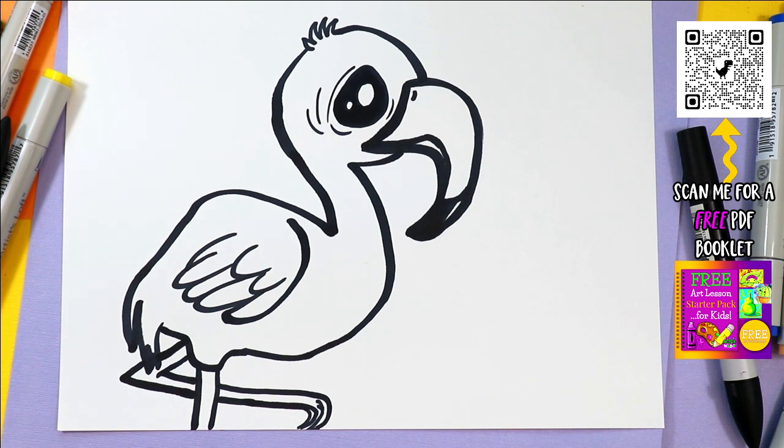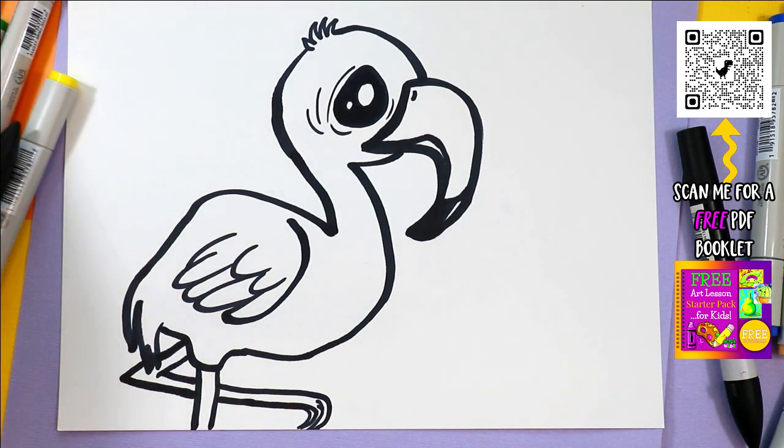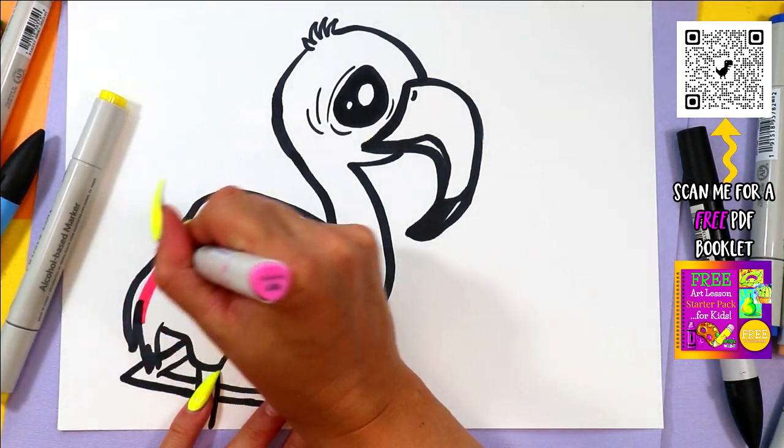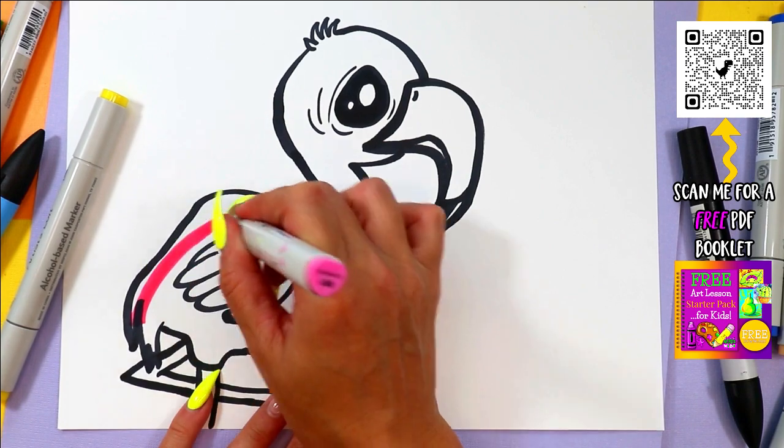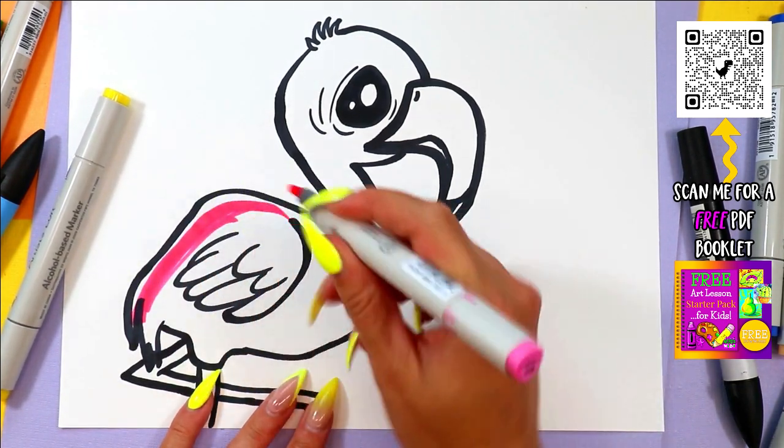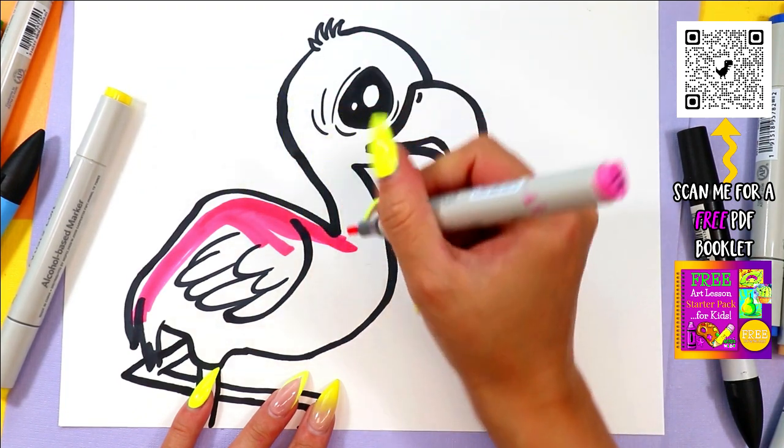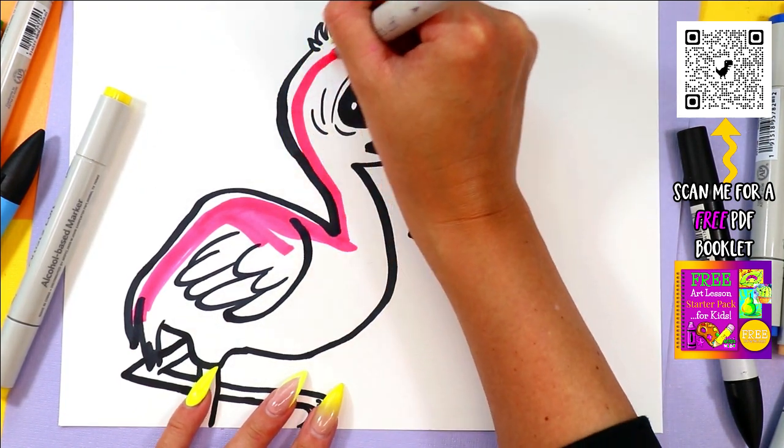And once you're done, you are ready to give it some color. So grab your favorite flamingo colors. They come in lots of different colors, especially depending on what they're eating. So you can go ahead and take a look online for some colors or just make up your own. You can also grab whatever you want to color with. It's really up to you. And once you have an idea of what you want to do, go ahead and make a mark and see what happens.